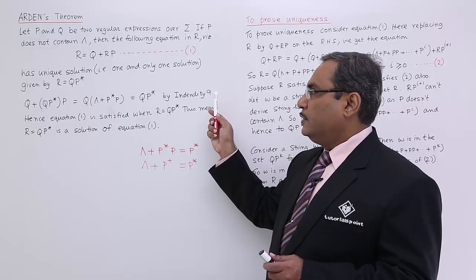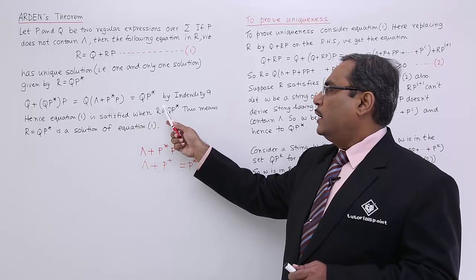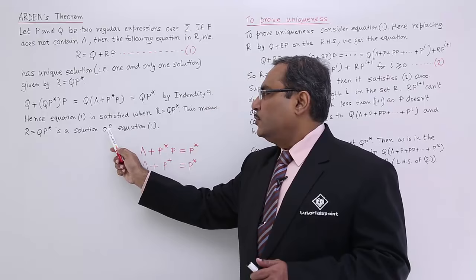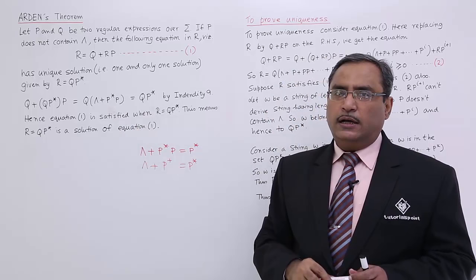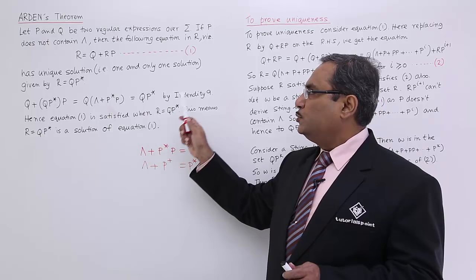Here we see that deducing this gives us QP*, which is exactly what R = QP* states. Hence, equation 1 is satisfied when R = QP*. This means R = QP* is a solution of the equation, but we cannot yet ensure it is the unique solution. Up to this point we have proved it is a solution; that it is the unique solution must be proved in the second section.